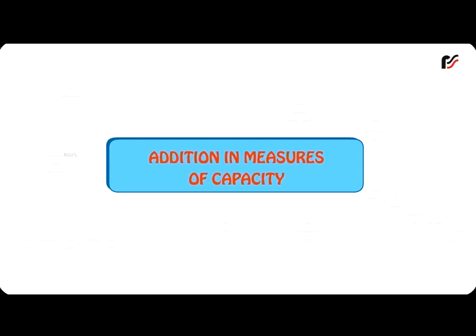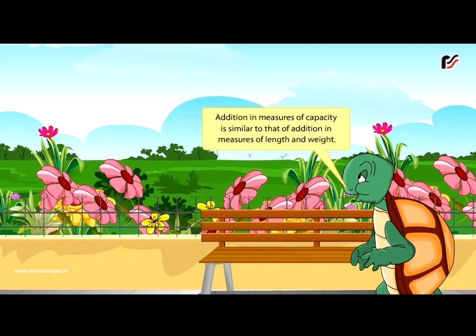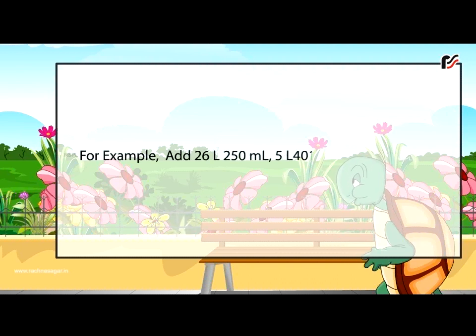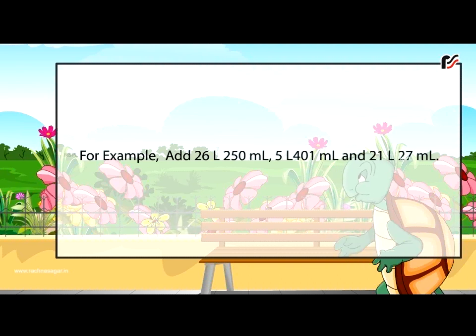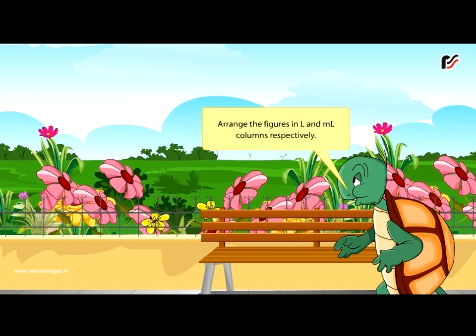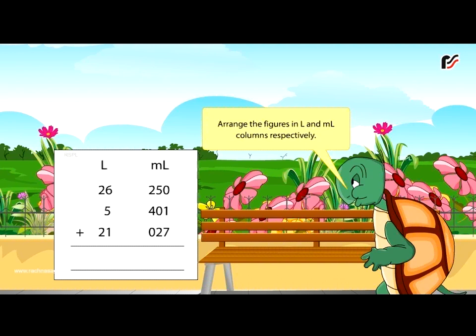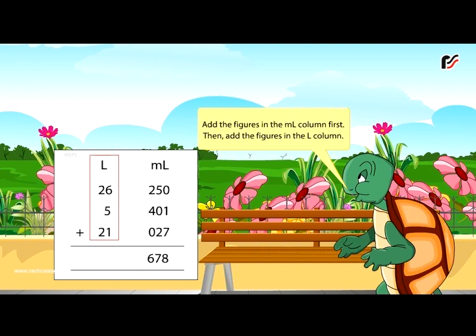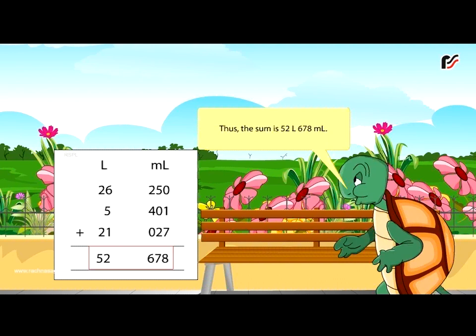Addition in measures of capacity is similar to that of addition in measures of length and weight. For example, add 26 litres 250 mL, 5 litres 401 mL, and 21 litres 27 mL. Arrange the figures in litre and millilitre columns respectively. Add the figures in the millilitres column first, then add the figures in the litres column. Thus, the sum is 52 litres 678 millilitres.